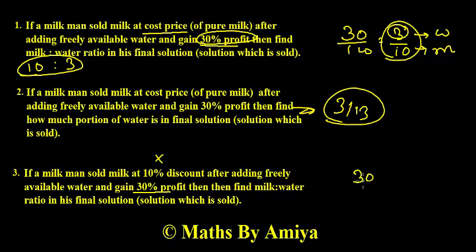We have 30% profit. The fractional part of 30% profit is nothing but 30 upon 100. Our complete solution is 130, means we are selling 130 liter in which the 30 is water and 100 is milk.